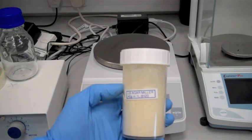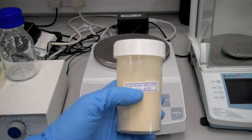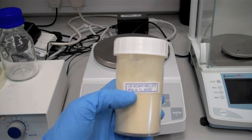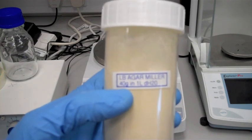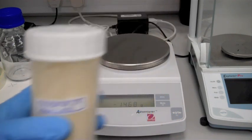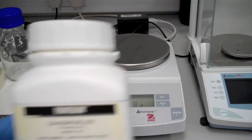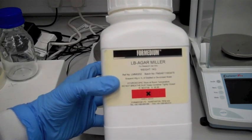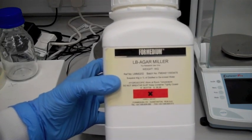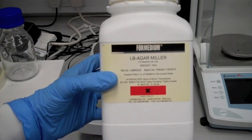The media is in these bottles. It's been labeled LB Agar Miller, and it tells you the amount required in one liter. Forty grams is required in one liter. The stock bottle is made by 4Media, and that's the bottle that it is contained in. So the information is there if you require it.